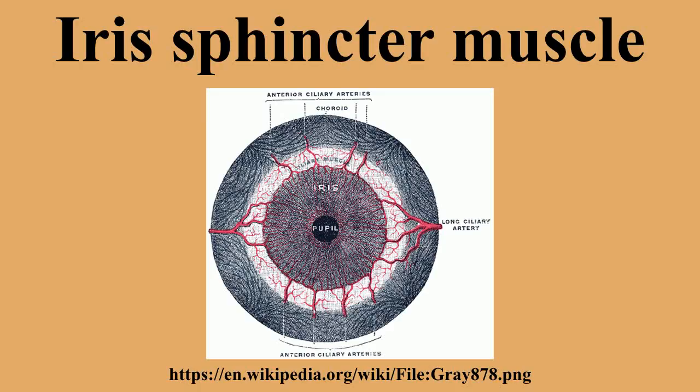Innervation: it is controlled by parasympathetic fibers that originate from the Edinger-Westphal nucleus, travel along the oculomotor nerve, synapse in the ciliary ganglion, and then enter via the short ciliary nerves.